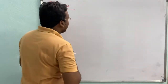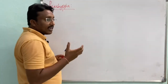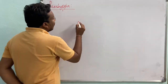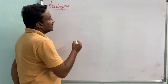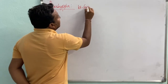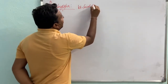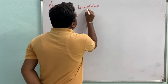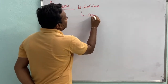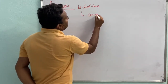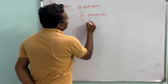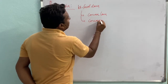Presbyopia can be cured by using a bifocal lens. A bifocal lens consists of a convex lens as well as a concave lens — both combined together.